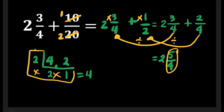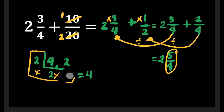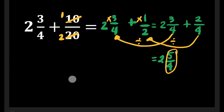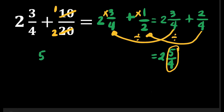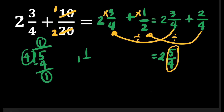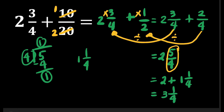We need to change 5 fourths to a mixed number, then add it to the whole number 2. Let us divide 5 by 4. How many 4s are there in 5? That's 1. 1 times 4 is equal to 4. Then 5 minus 4 is equal to 1. So that's 1 and 1 fourth. It means 5 fourths is equal to 1 and 1 fourth. So that's going to be 2 plus 1 and 1 fourth. Our answer will be 3 and 1 fourth. That's our final answer.